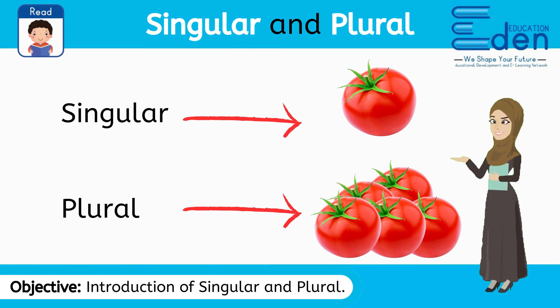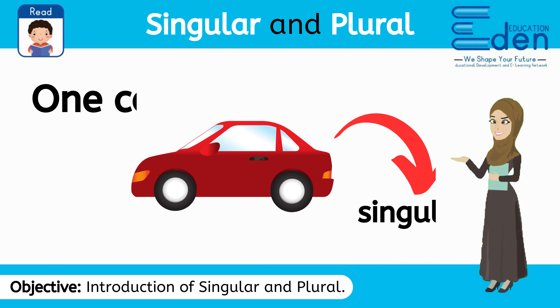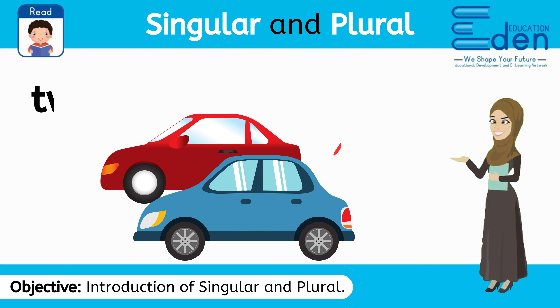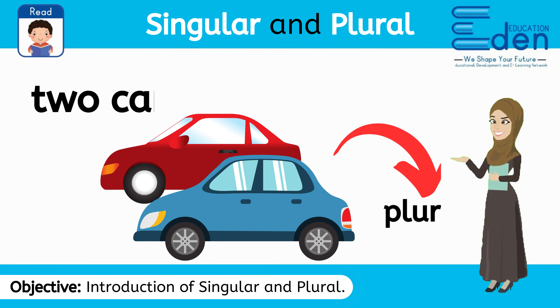For example, this is one car. One car is singular. These are two cars. Two cars are plural.